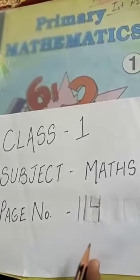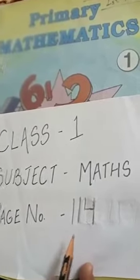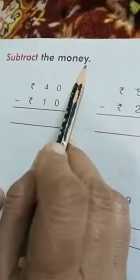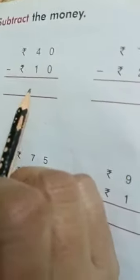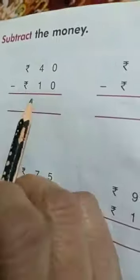Good morning students. Take out your math book, page 114. Subtract the money. Now in this page we will do the sums of subtraction.